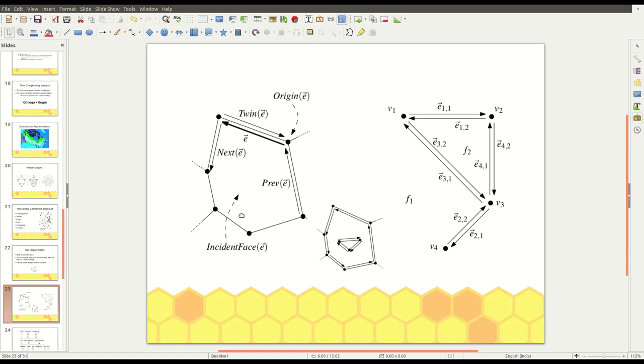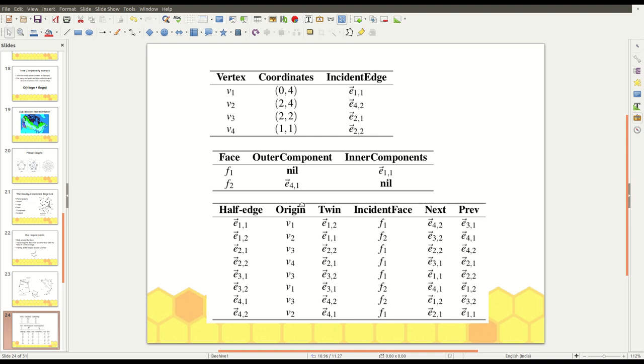So, for example, consider this subdivision that has two faces bounded by these one, two, three, four edges and four vertices. So, the data structure will store the values like this. This has three lists. The first one is a vertex list. Vertex, we have four vertices. They will show the coordinates of the vertex and the incident edge.